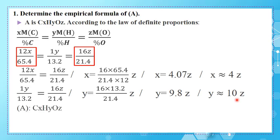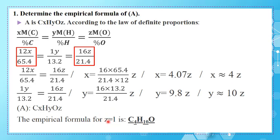With X = 4Z, Y = 10Z, and Z = 1, the empirical formula of A is C₄H₁₀O. The empirical formula shows the smallest proportions of the elements with respect to each other. A could be C₄H₁₀O, or C₈H₂₀O₂, or C₁₂H₃₀O₃, and so on — the empirical formula represents the least ratio of elements.